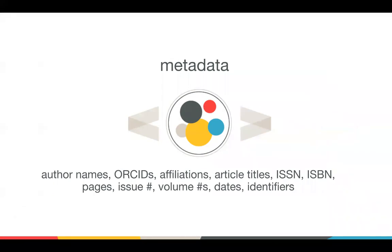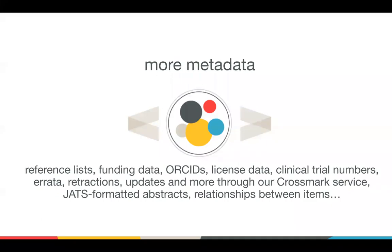Crossref is not just about DOIs. When you register your content, you send us the basic citation metadata for every item, including things like titles, authors, publication dates, issue numbers, the ISSN, ISBN — anything that describes the content you're registering — and this goes alongside the DOI. We also collect non-bibliographic metadata, which can include the reference list, funding data, ORCID IDs, license data, clinical trial information, abstracts, data about relationships between items, and information on errata, retractions, and updates. We have minimal requirements, but we ask that you send us as much metadata as possible and that it be accurate and clean. The more comprehensive your metadata, the more likely your content will be discovered and disseminated.